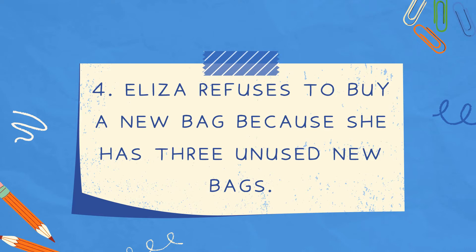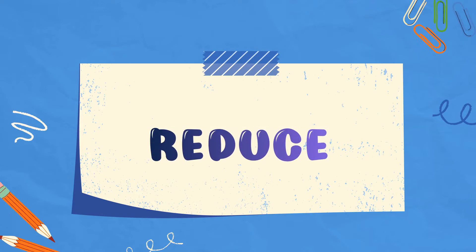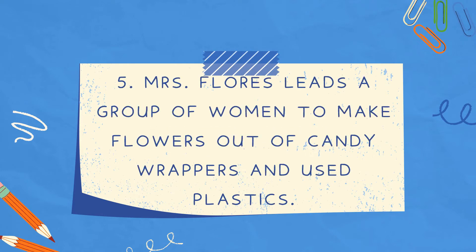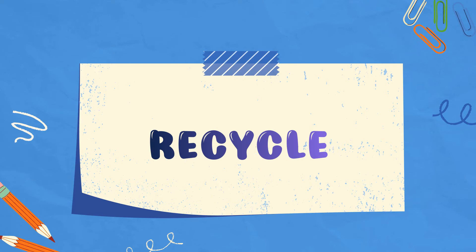Number 4: Elisa refuses to buy a new bag because she has 3 unused new bags. The answer is reduce. For number 5: Mrs. Flores leads a group of women to make flowers out of candy wrappers and used plastics. The answer is recycle.